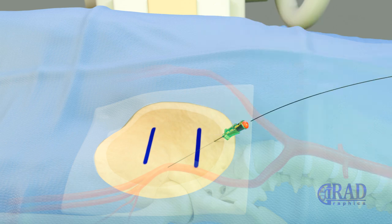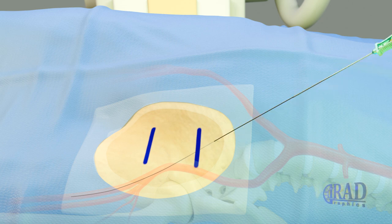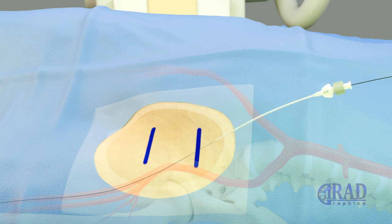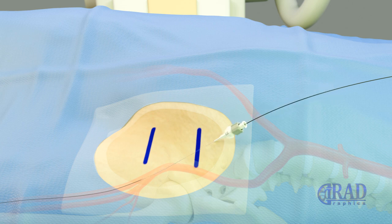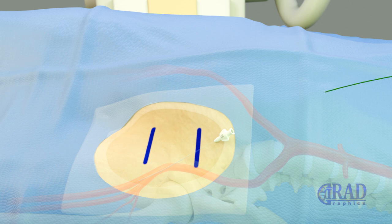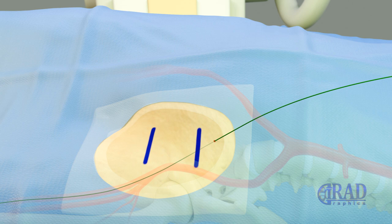Upon noting blood return, a microwire is advanced through the needle into the superficial femoral artery. The needle is then exchanged for a transitional sheath, which is advanced over the microwire. The microwire and inner dilator of the transitional sheath are replaced with a larger wire, which is advanced through the transitional sheath into the distal ipsilateral superficial femoral artery.